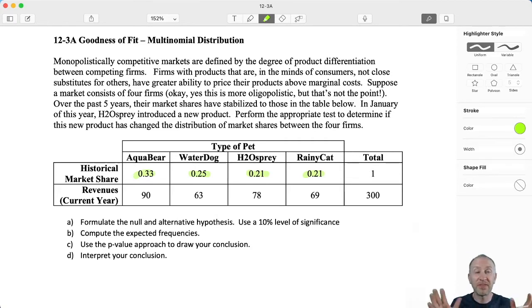So we have some historical market shares based on historical data. Now that H2O Spray has introduced a new product, now we want to see, do we have evidence to show that that has changed the distribution of revenues amongst these four firms? So the null hypothesis here is really going to be somewhat pessimistic. No, it has not had any impact.